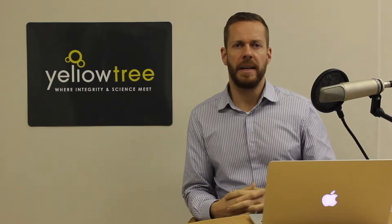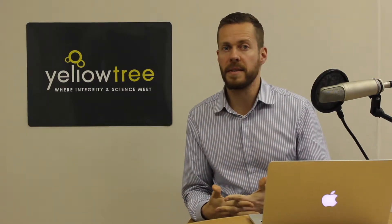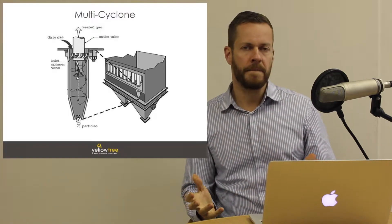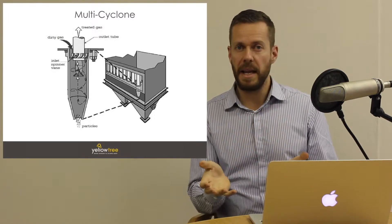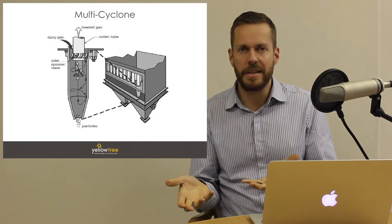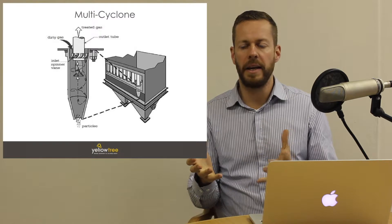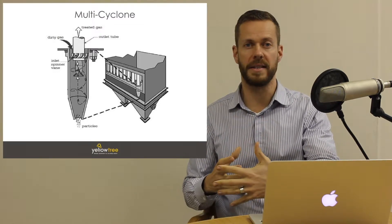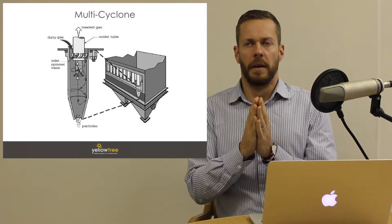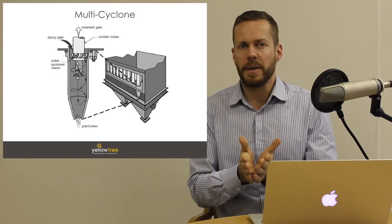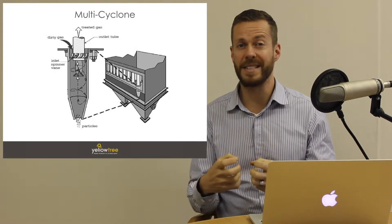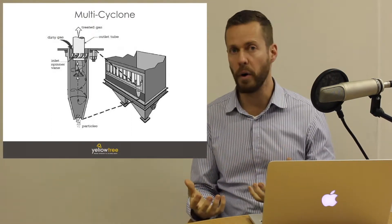This short presentation is to share the problems that exist with multicyclones. Starting with a schematic: the word 'multi' means many and a cyclone is a cyclone, so a multicyclone is a body or housing with many individual cyclones inside it. The reason we don't use an individual cyclone is because grouping many cyclones together in a multicyclone is actually more efficient.